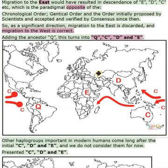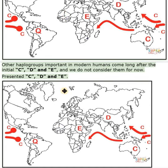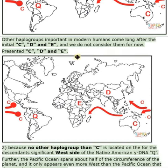So, as a significant direction, migration to the east is discarded, and migration to the west is correct. Adding the ancestor Q, this turns into Q, C, D, and E. Other haplogroups important in modern humans come long after the initial C, D, and E, and we do not consider them for now.